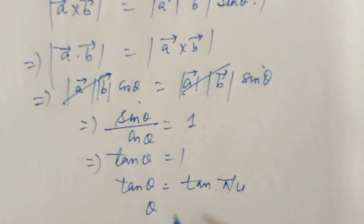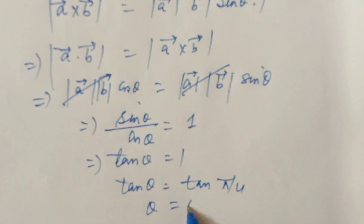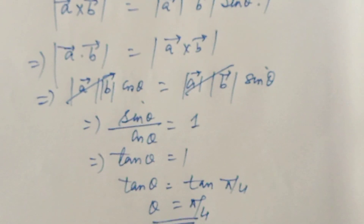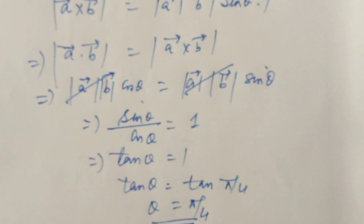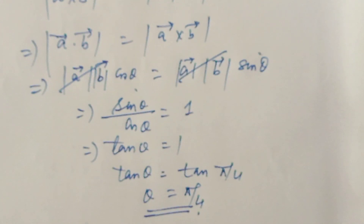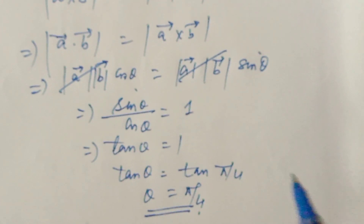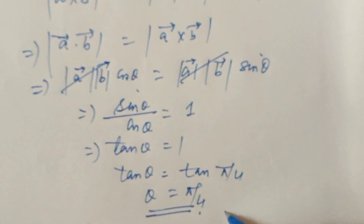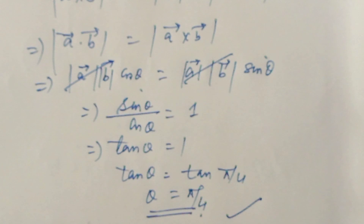Tan theta equals 1 for theta equal to pi by 4. So the angle between the two vectors is pi by 4. This is the answer. Thank you for watching my video.